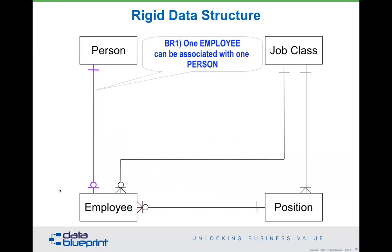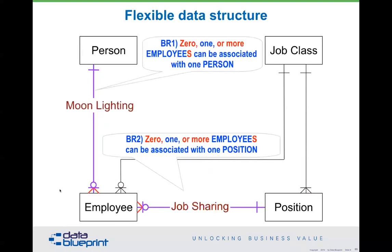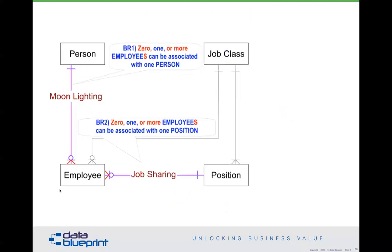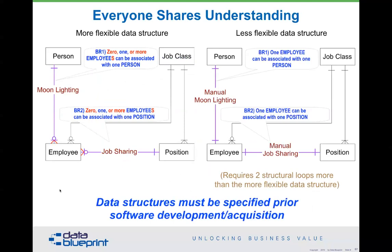One employee can be associated with one position — notice the purple on the left-hand side. When we make the rest of it more flexible, the purple on the left-hand side changes to one eventually or multiple, and now that's a more flexible data model. These two data models placed side by side show that the more restrictive one has implications to how you develop software to process its data. These data structures must be specified before software development or acquisition. If you build software one way and the data model the other way, it's going to be a major issue in the organization.